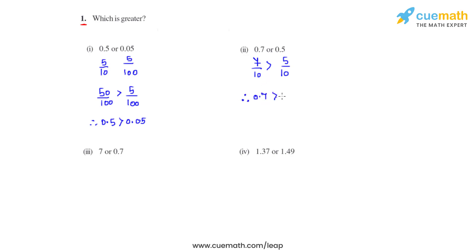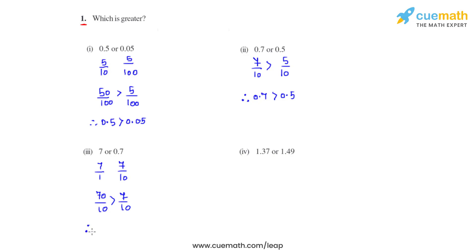Coming to the third bit, we have 7 and 0.7. The equivalent fraction of 7 can be written as 7 over 1, and 0.7 as 7 over 10. We'll make the denominator of 7 over 1 equal to 10 by multiplying numerator and denominator by 10, giving us 70 over 10. Since 70 is greater than 7, we can say 70 over 10 is greater than 7 over 10, therefore 7 is greater than 0.7.